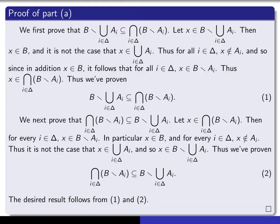Now let's look at the details. Suppose we have an x in the left-hand side. Then x is in B but not in the union. We negate the statement that there exists an i in delta such that x is in a sub i, giving us: for all i in delta, x is not in a sub i. Since in addition x is in B, it follows that for all i in delta, x is in B minus a sub i. Since that's true for every single i in the indexing set, it follows that x is in the intersection of all of these sets. So we've got one half of it.